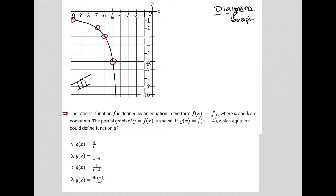The question says the rational function f is defined by an equation in the form f(x) equals a over x plus b, where a and b are constants. The partial graph of y equals f(x) is shown. If g(x) equals f(x plus four), which equation could define function g?